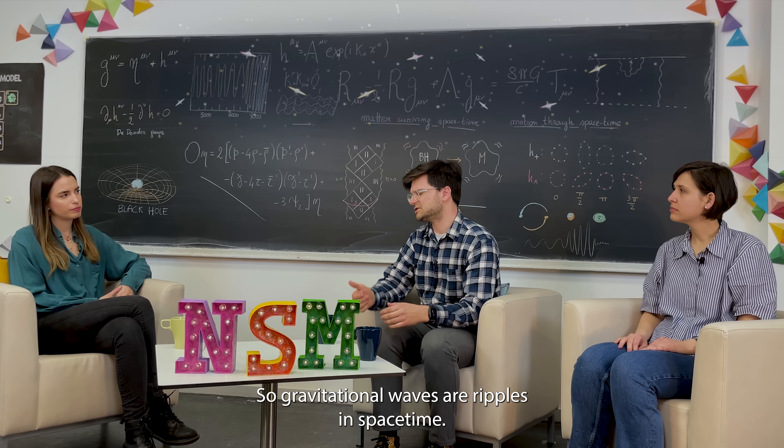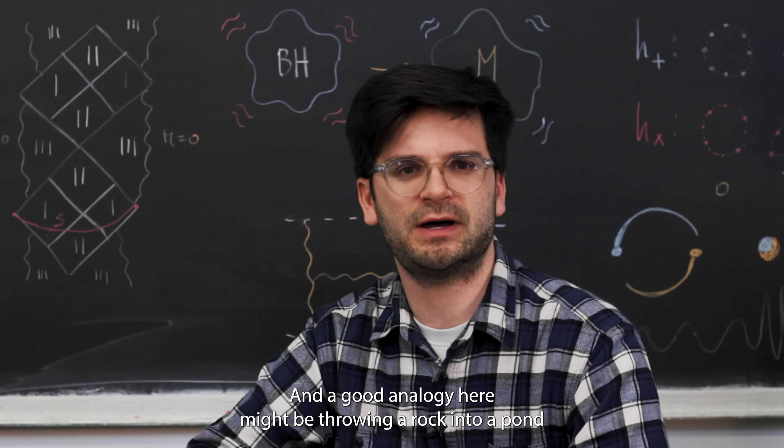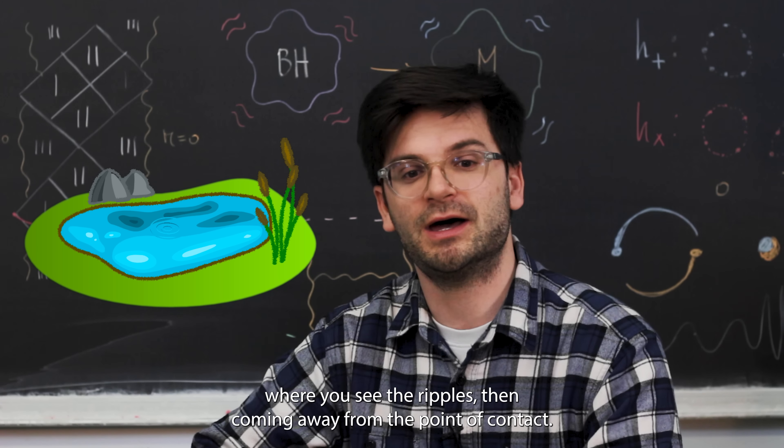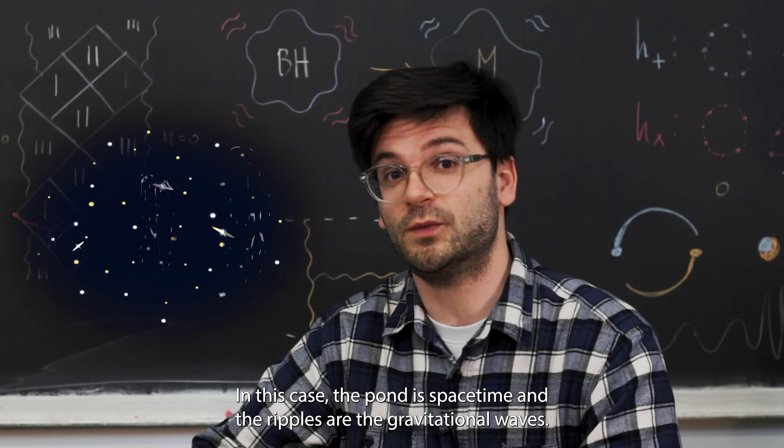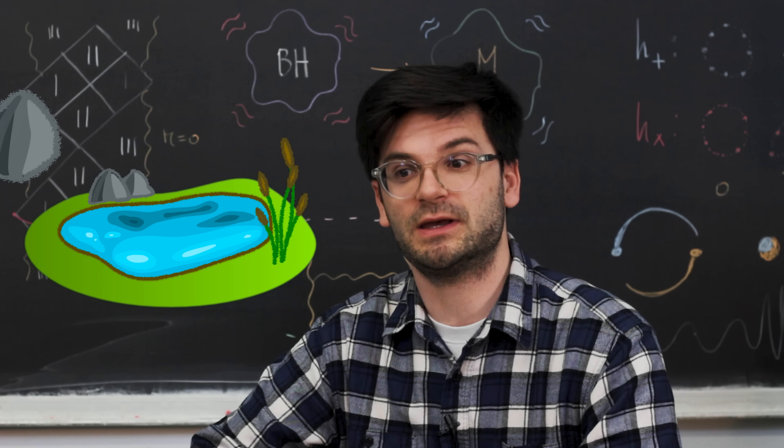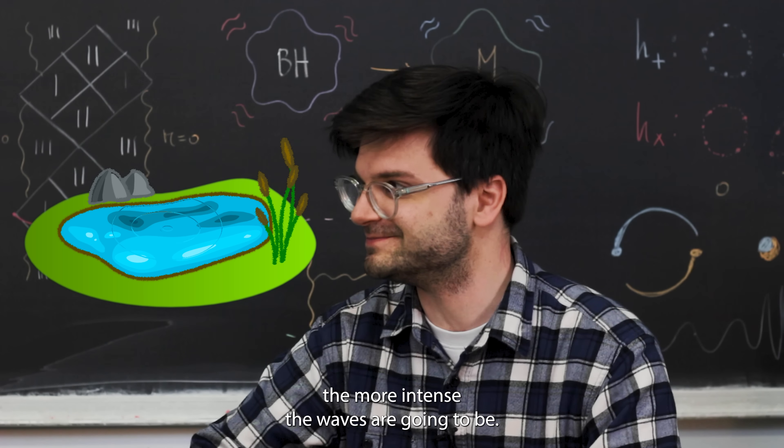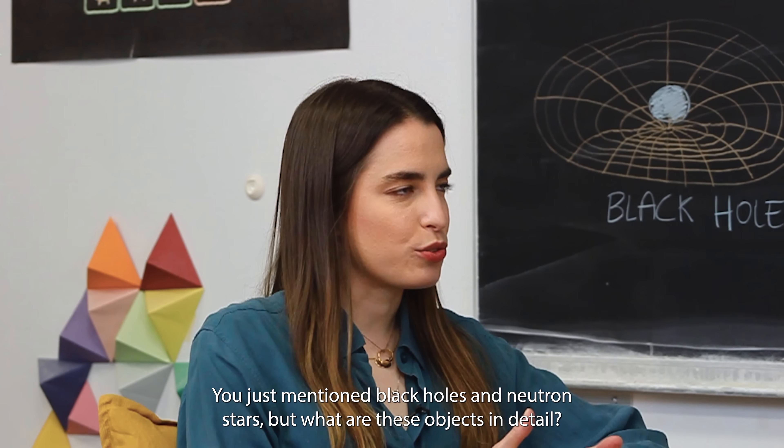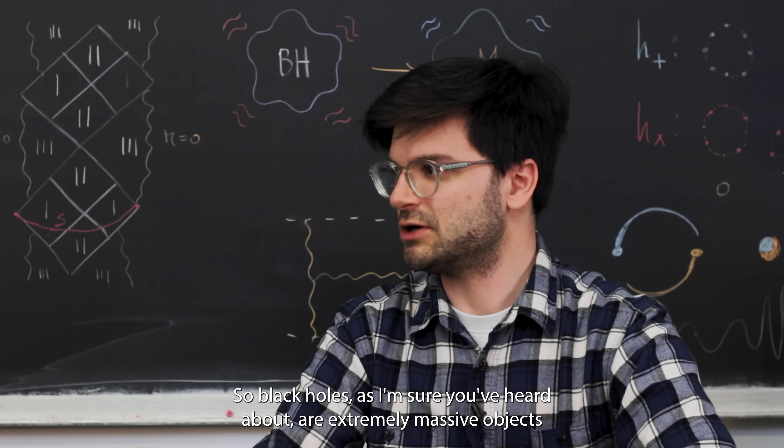Perhaps we could start with a bit of a review. Gustav, what are gravitational waves? Gravitational waves are ripples in spacetime. A good analogy here might be throwing a rock into a pond where you see the ripples coming away from the point of contact. In this case, the pond is spacetime and the ripples are the gravitational waves. And the more massive the source that you throw into the pond, in this case the black holes or neutron stars, the more intense the waves are going to be.